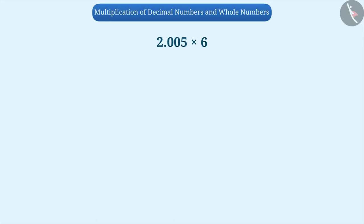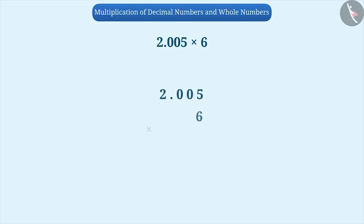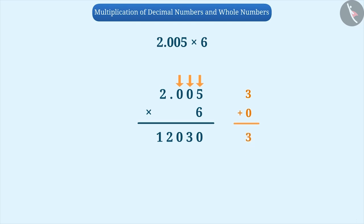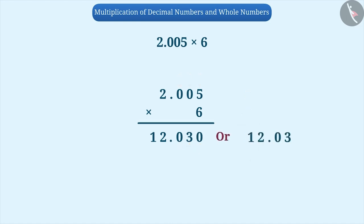Similarly, can you obtain the value of 2.005 multiplied by 6? Pause the video and try to solve this. First, we write the given numbers one below the other, then multiply them as whole numbers. In the given numbers, the number of digits after the decimal point is 3 plus 0, which equals 3. So in the result, we place the decimal point by counting three digits from the right. Therefore, the result is 12.030, which can also be written as 12.03.